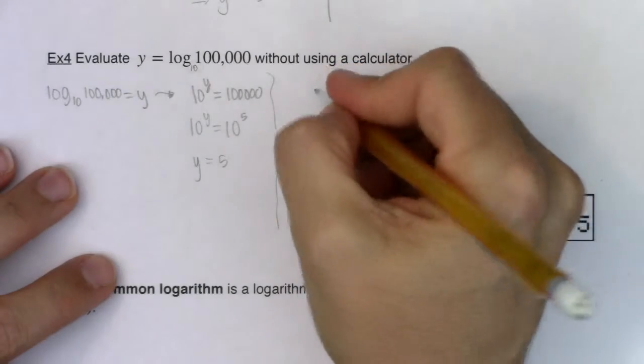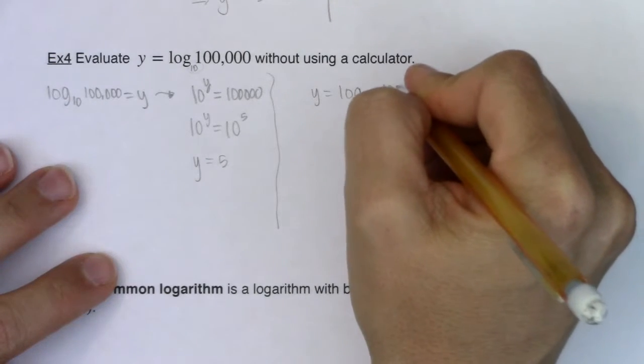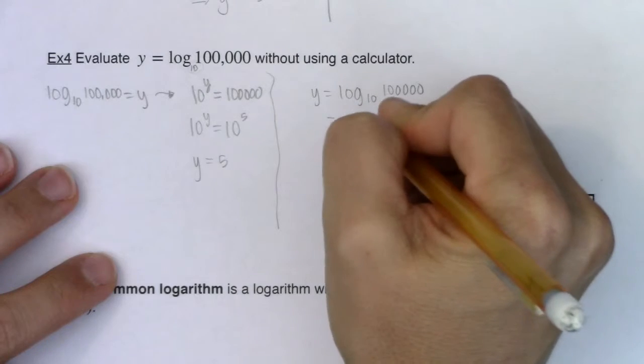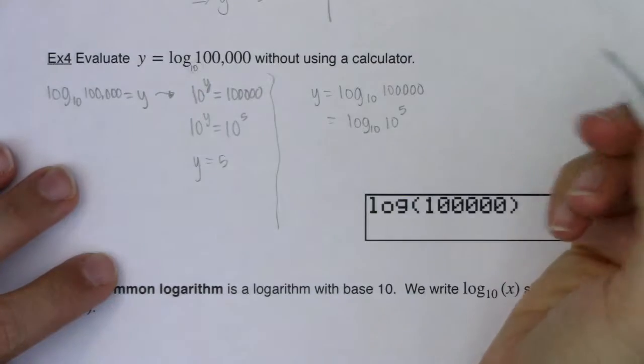And like I said, I think it's a good habit to start practicing these properties of logarithms. So I see this and I said, well this is log base 10. This number, this argument of a hundred thousand can be written as 10 to the fifth.